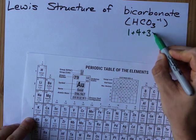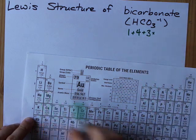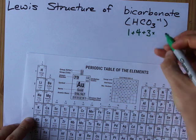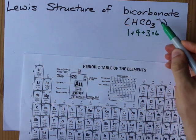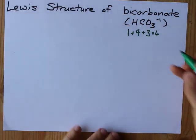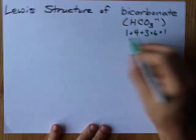We have three oxygens, and each oxygen brings one, two, three, four, five, six electrons. And because we have an extra minus one charge on the anion, we have to add an extra electron into the mix.